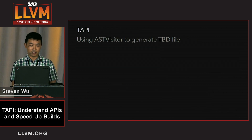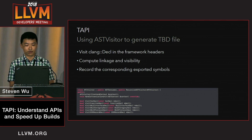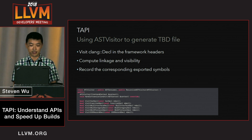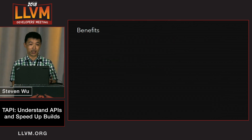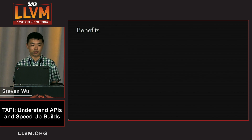How do we do that? We use Clang AST visitors. We visit all the Clang declarations in the framework headers, compute their linkage and visibility, and then we can record the corresponding exported symbols. So now we have two different paths: one from headers to the TBD file, and one from the binaries to the TBD file.